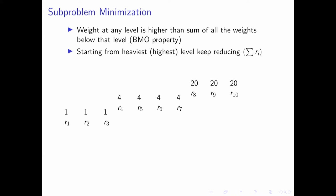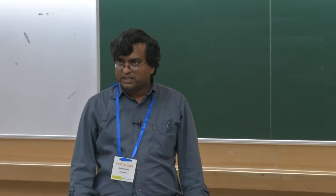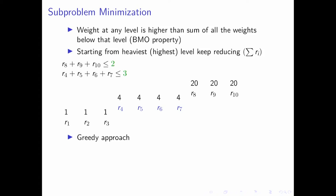Whenever the cardinality constraint becomes unsatisfiable at a given level, we freeze that constraint and move to the next level below. This greedy strategy — minimizing cost from the top level downwards — is optimal if the BMO property holds, because the weight of the top-level clause alone exceeds the combined weight of all lower-level clauses. If the property does not hold, there is no such guarantee, but we apply the algorithm anyway and observe how much it deviates in practice.